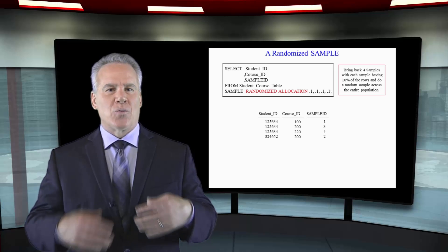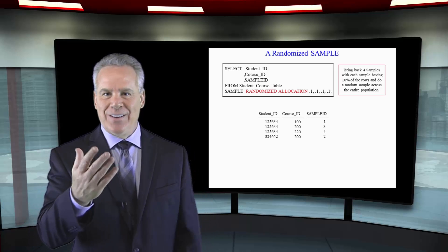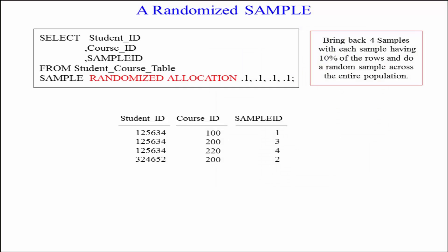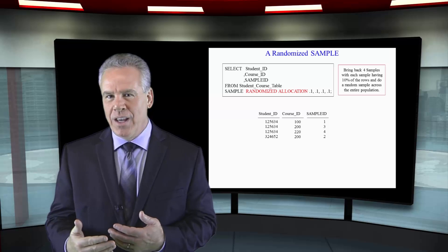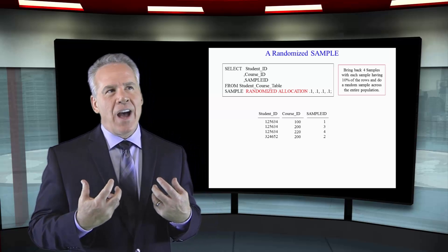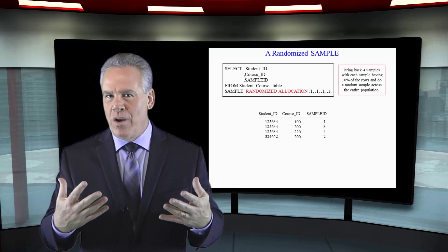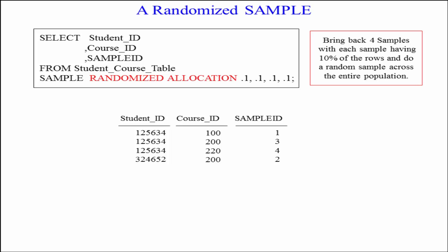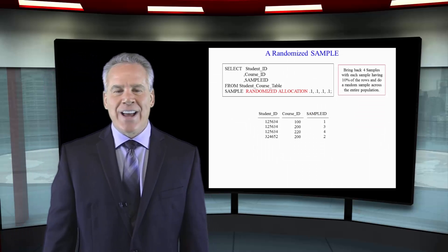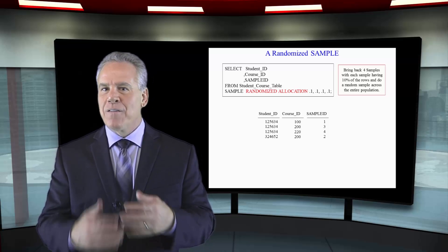Here is the SAMPLE RANDOMIZED ALLOCATION query. Take a look at this. As you can see at the bottom, it says SAMPLE RANDOMIZED ALLOCATION .1, .1, .1, .1, .1 — so we're taking four 10% samples. The reason you might use this is because by default Teradata, when you say I've got 100 amps and I'd like a sample of 100 rows in a large table, it tries to get one row from each amp — a proportional sample from each amp. But when you say RANDOMIZED ALLOCATION, it's not going to do that; it's going to pull 10% from anywhere it finds.